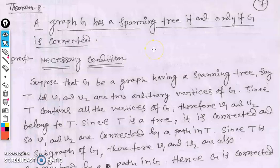This is the continuation of the second lecture, covering sections A and B. It is the last lecture for Module 5, where we will introduce some more theorems related to trees.